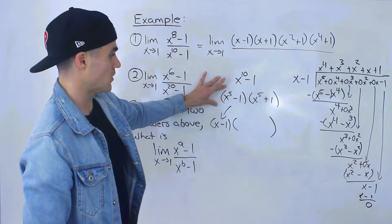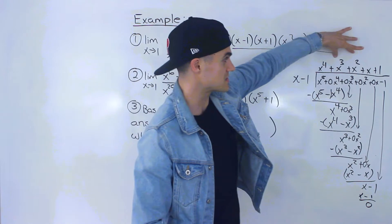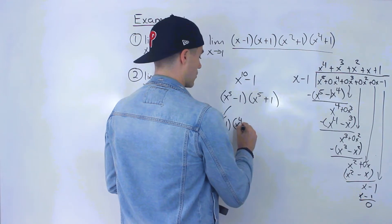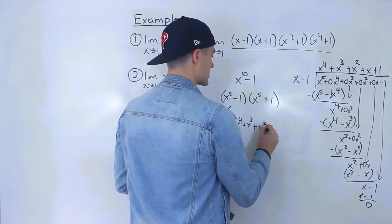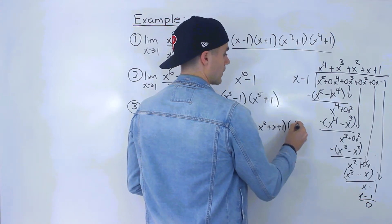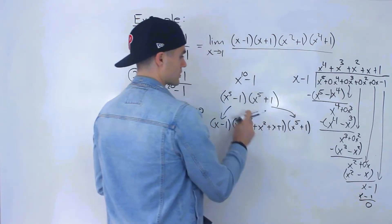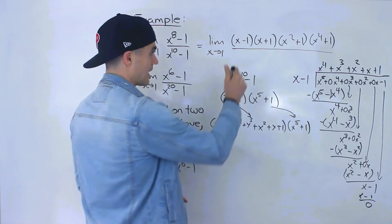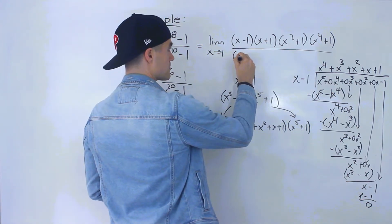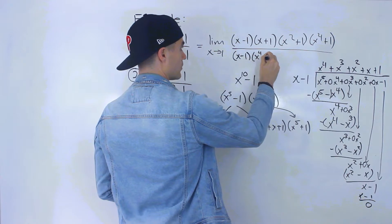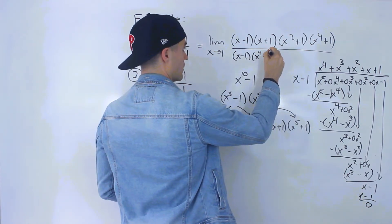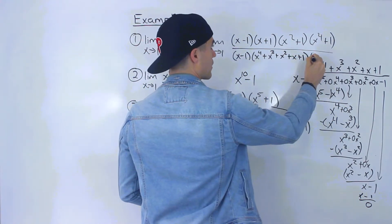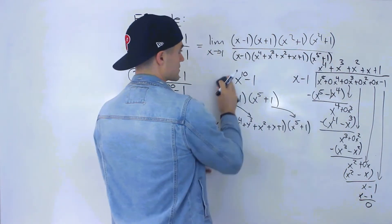So x to the power of 5 minus 1 factors into x minus 1 times x to the power of 4 plus x to the power of 3 plus x squared plus x plus 1. Then we still have the x to the power of 5 plus 1 bracket. So x to the power of 10 minus 1 factors into x minus 1, times that degree-4 polynomial, times x to the power of 5 plus 1.